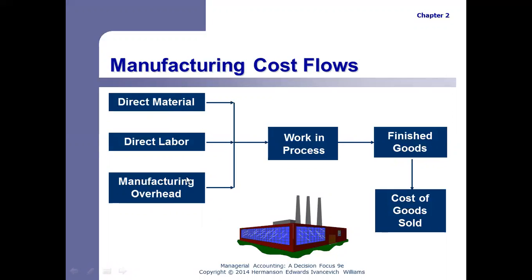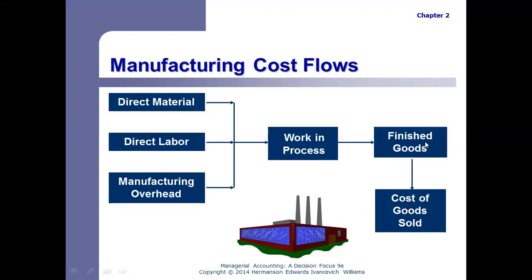The connection between types of inventory and manufacturing costs: direct materials, direct labor, and manufacturing overhead all go into work in process. That becomes finished goods — ready to be sold — and when sold, it goes into cost of goods sold. This diagram would have been more complete with a raw materials inventory box, since raw materials become direct materials during the manufacturing process.